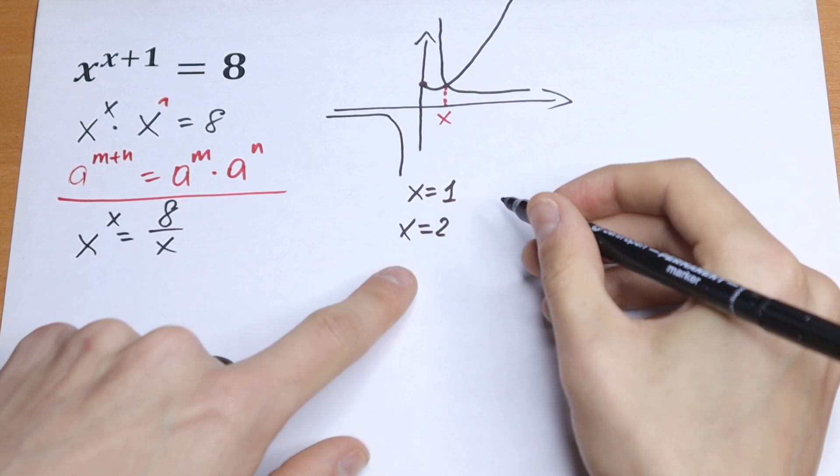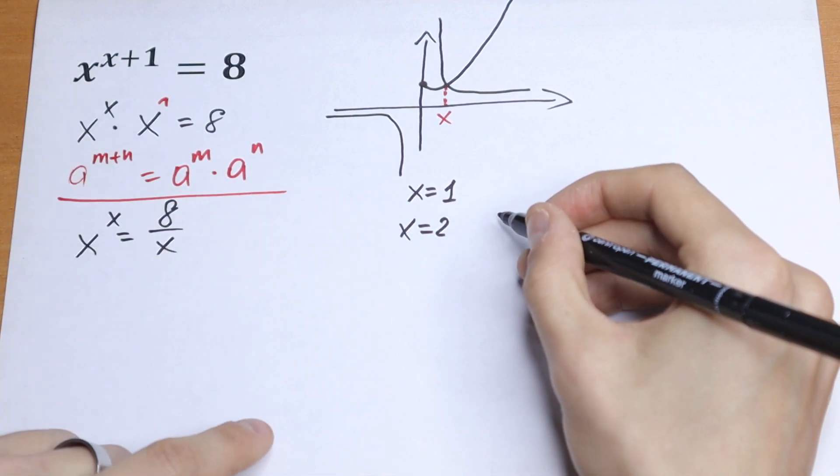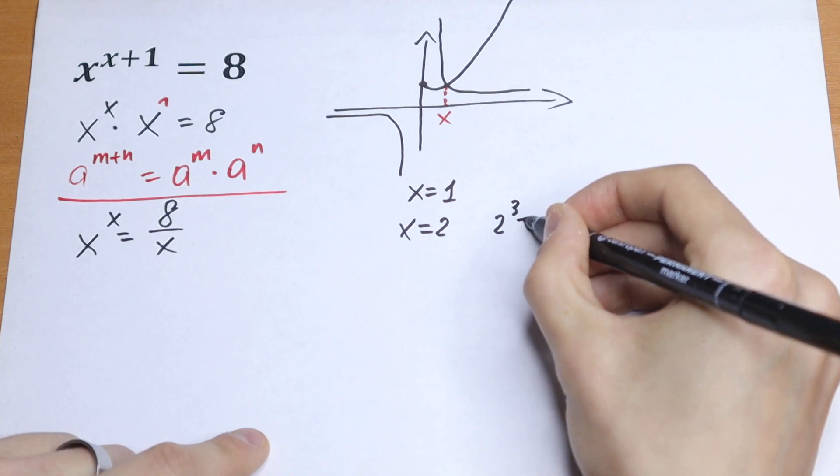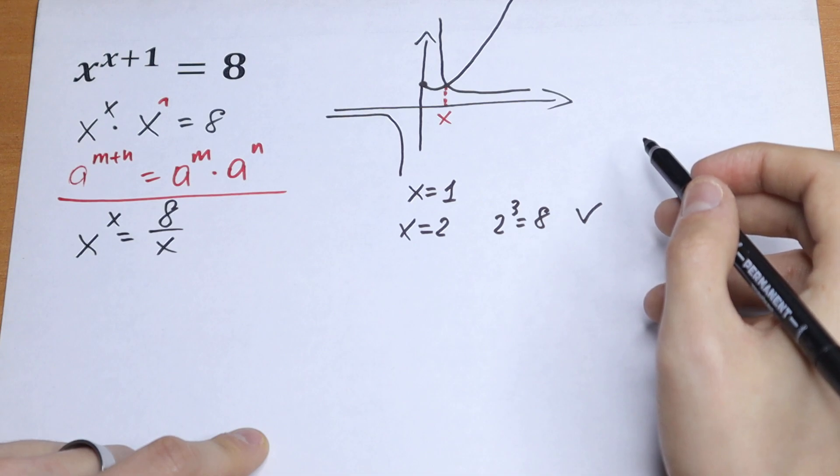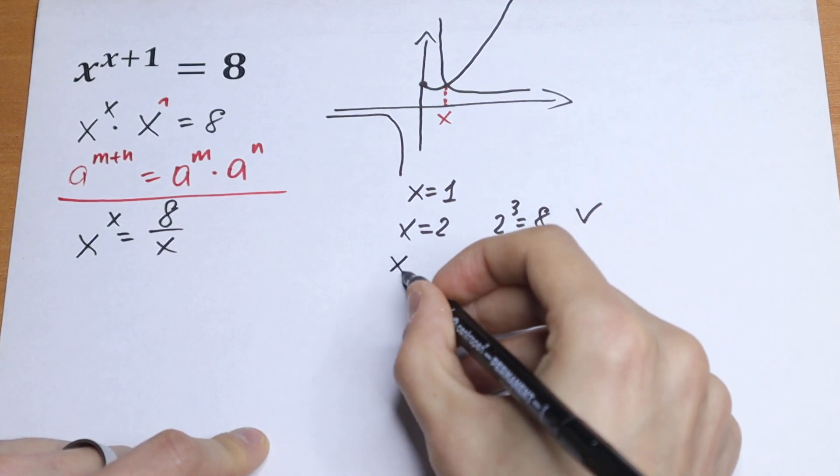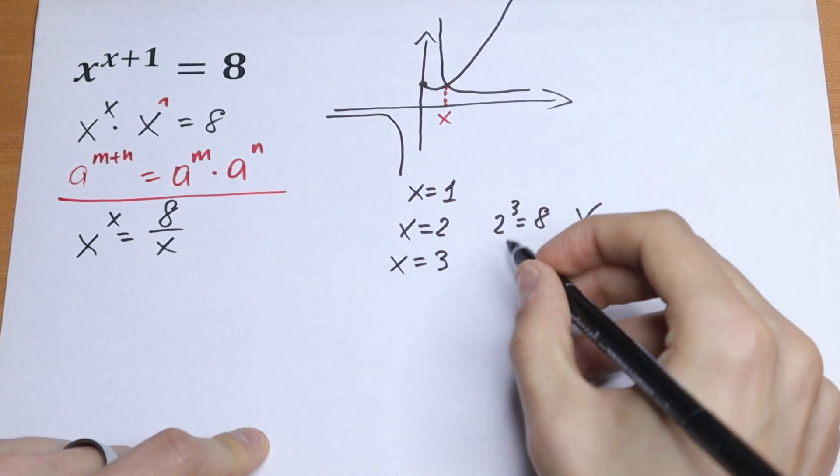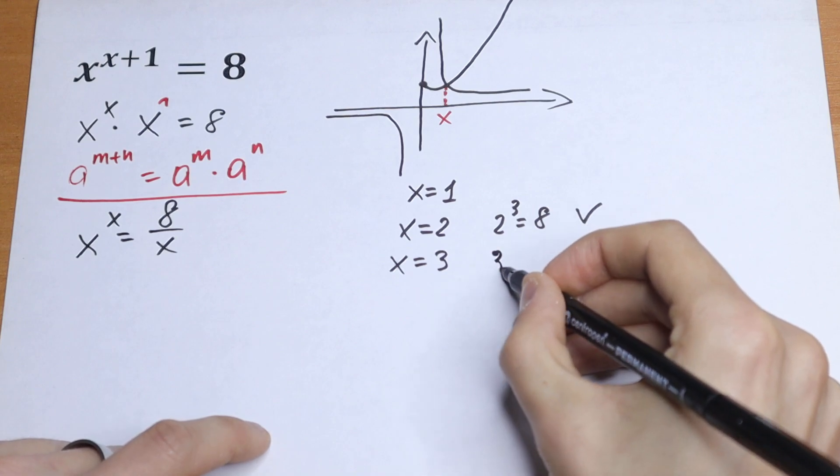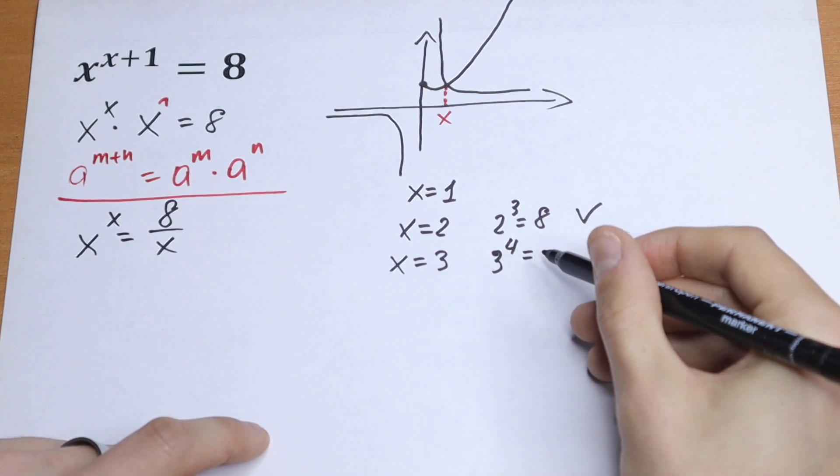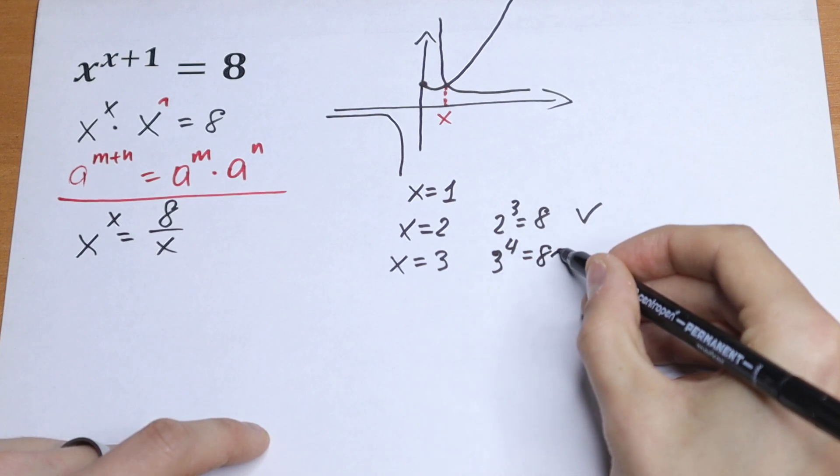So as a result, we will have 2 to the power 3 equal to 8. So this is our solution to this. And let's check x equal to 3. So we will have 3 to the fourth power equal to 8. Of course, it's not correct because it's equal to 81.